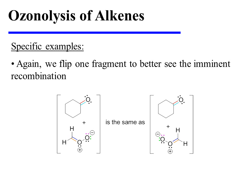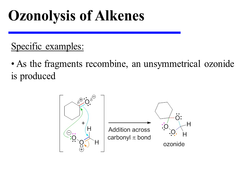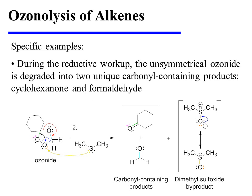Again, we will flip one fragment relative to the other to better see the imminent recombination. As the fragments recombine, an ozonide is formed, but this ozonide is unsymmetrical in contrast to the previous example. During the reductive workup, the unsymmetrical ozonide is degraded into two unique carbonyl-containing products — in this instance, cyclohexanone and formaldehyde. Again, dimethyl sulfoxide is a byproduct of the reaction.